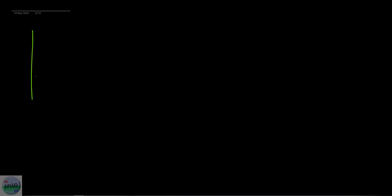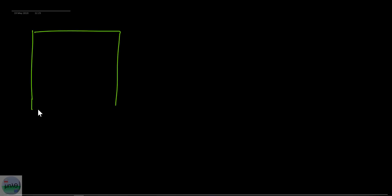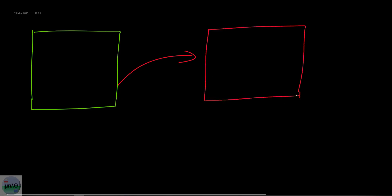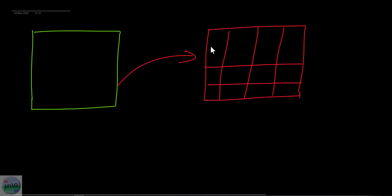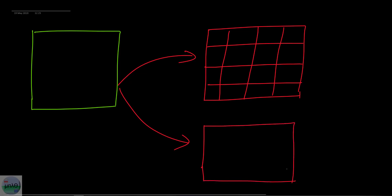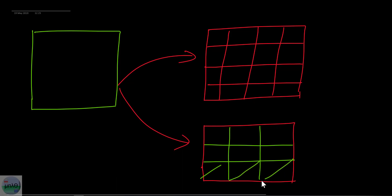In 2D cases, one example is a rectangular plate. This plate can be meshed in different ways. One way is using rectangular elements, giving a certain configuration, and a second way is meshing the same plate using triangular elements — you can see these are the triangular elements.